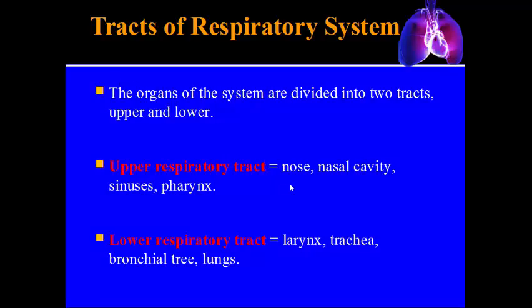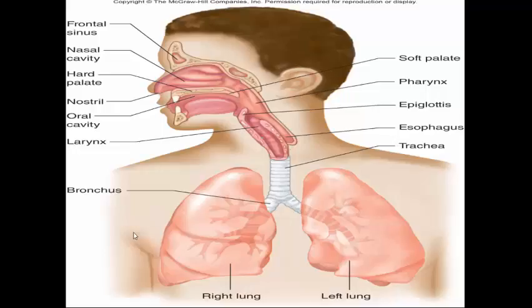The two components most often confused are the pharynx and the larynx. A good way to keep these straight: pharynx starts with a P and there's a P in upper; larynx starts with an L and there's an L in lower. Here's a basic image of the respiratory tract showing the mouth, nose, trachea, and lungs.